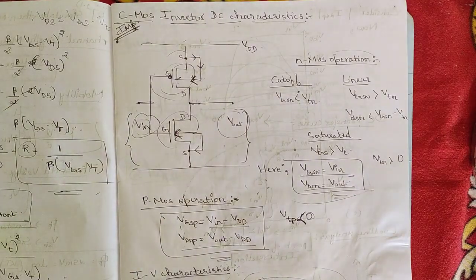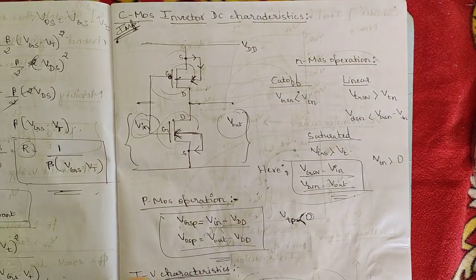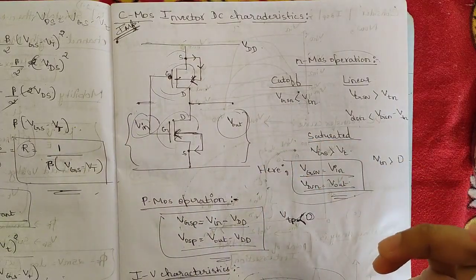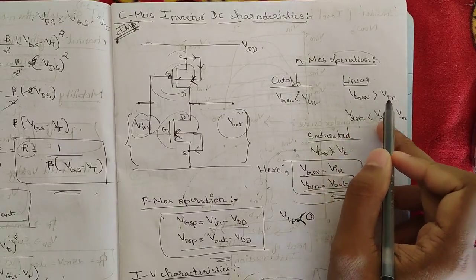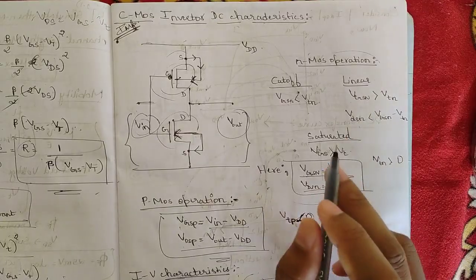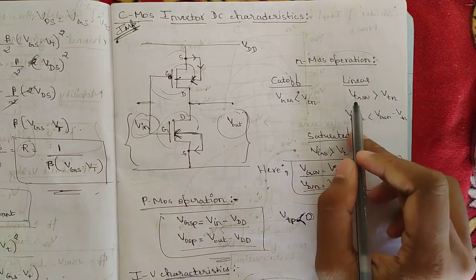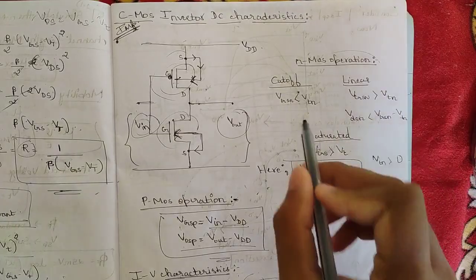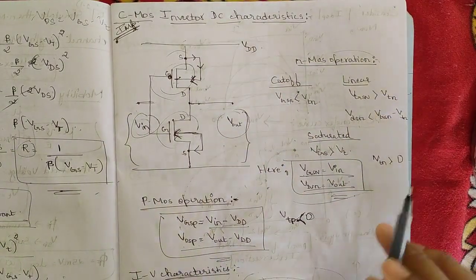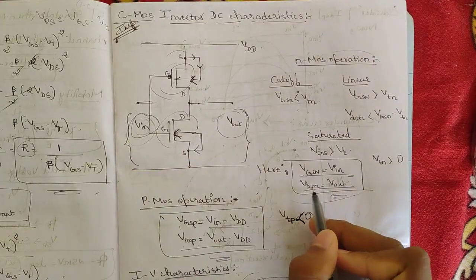For NMOS operation in the inverter we have three regions: cutoff, linear, and saturation. In cutoff, VGS < VT. In linear, VGS > VT and VDS < VGS − VT. For PMOS these conditions are reversed. Using these relations we get the key terms: VGSN = VIN and VDSN = VOUT.